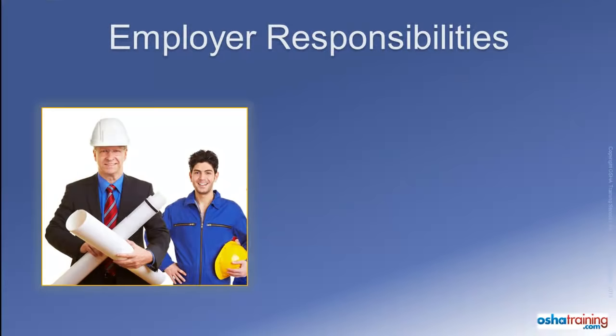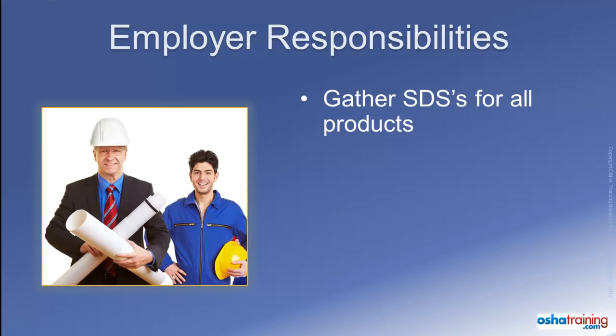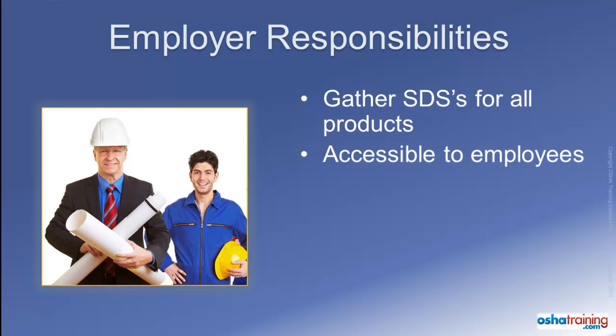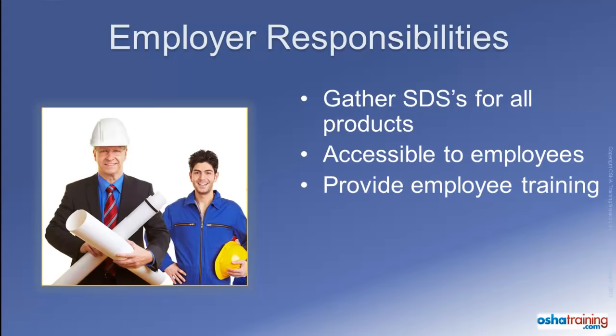Employers are responsible for gathering new safety data sheets for all hazardous chemicals and products to which their employees are exposed, and must make sure they are readily accessible during each work shift to employees while they are in their work areas. Employers must also provide training to their workers regarding the new safety data sheet format. All these things must be done by the deadlines established by OSHA in their Revised Hazard Communication Standard.